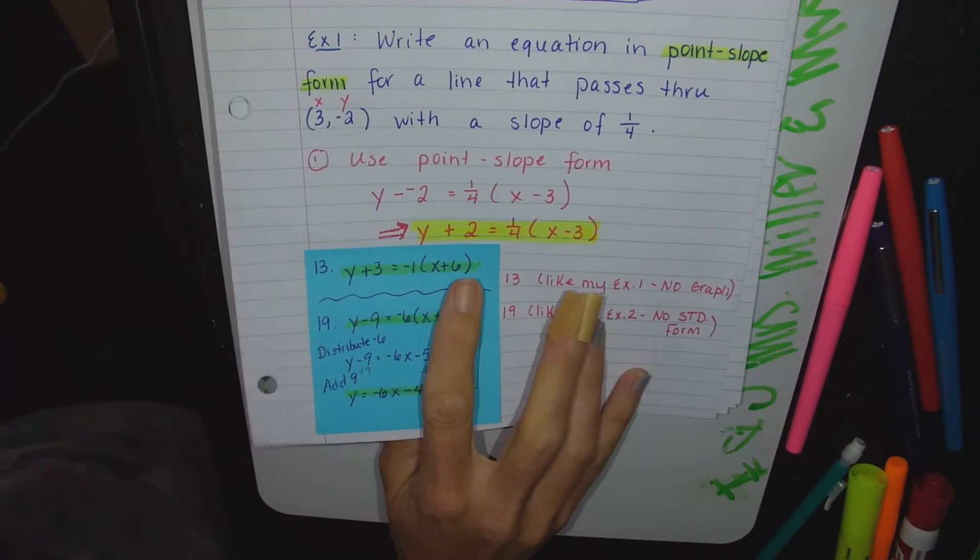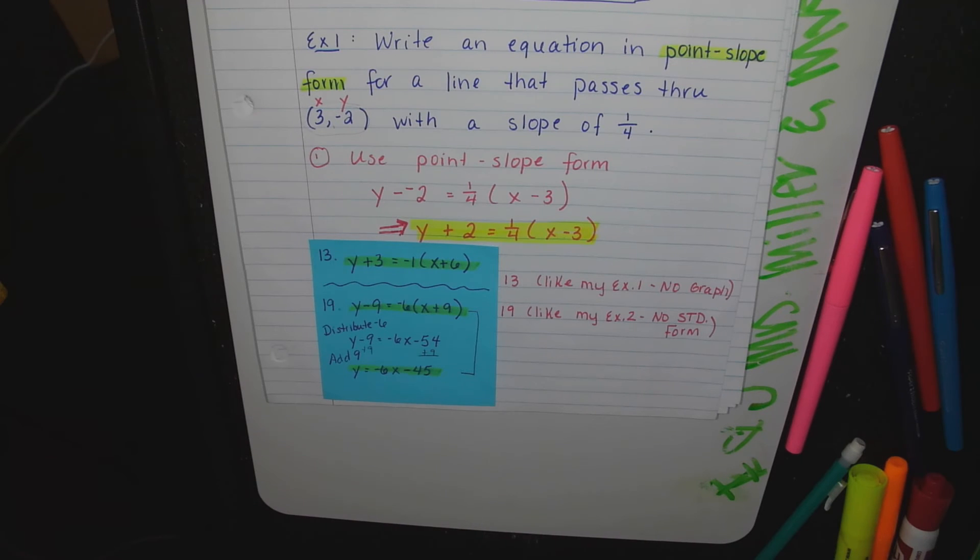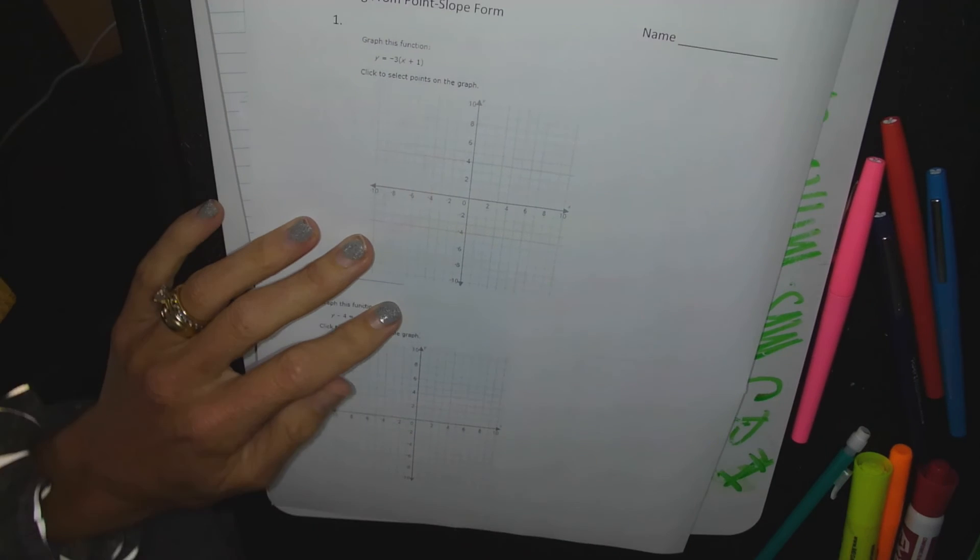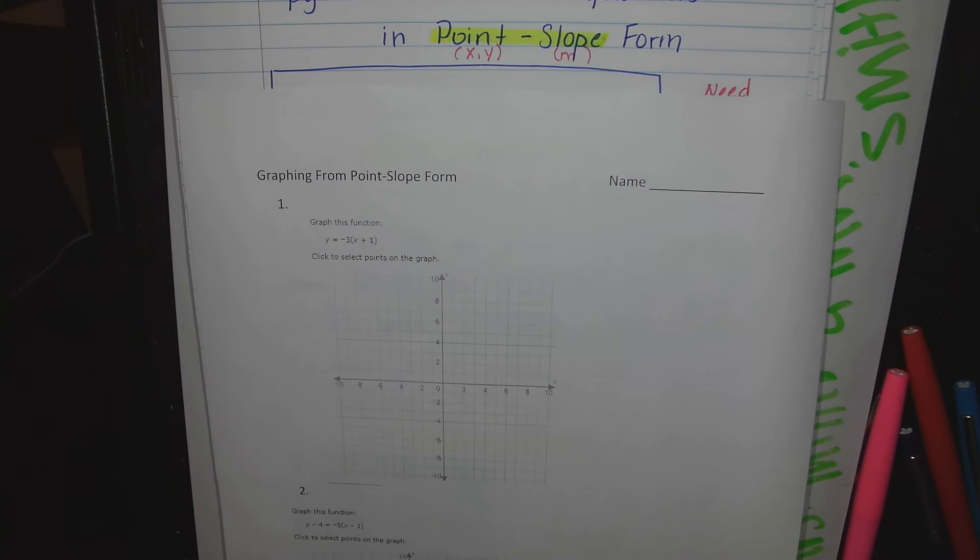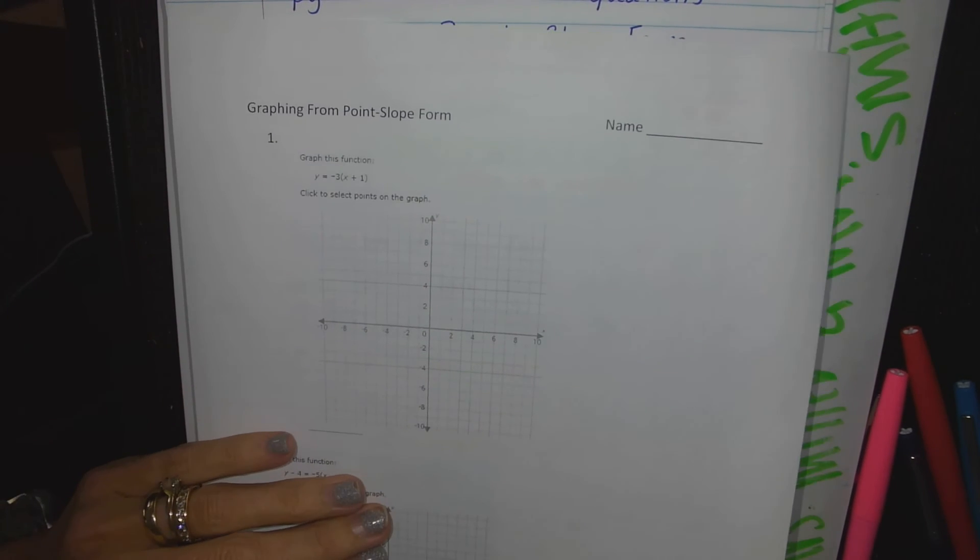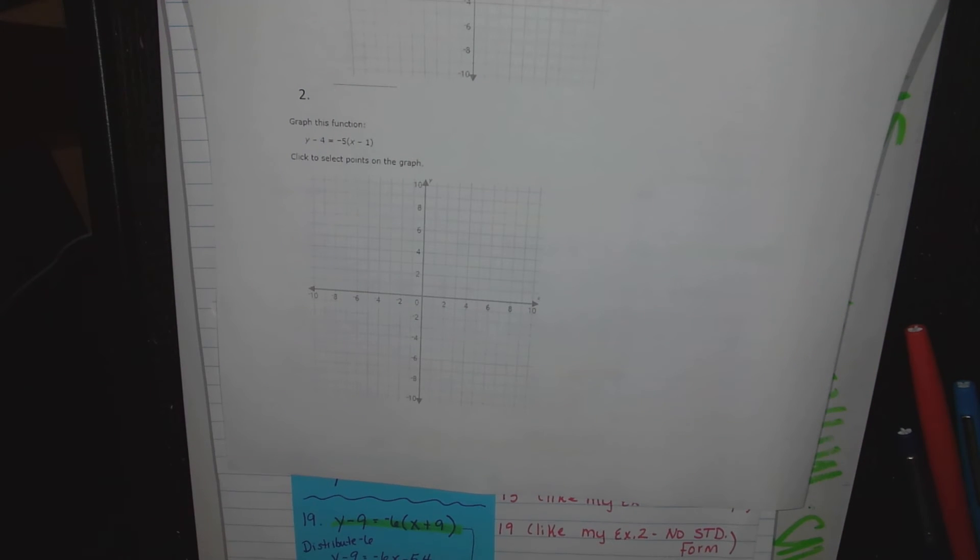All right, everybody got a piece of paper that says graphing? We are going to do this now. We're going to do one and two together. Remember a minute ago I was like, y'all, make sure you see where the - you are the best, everybody gets a piece of candy before you leave. I'm going to do number two first, so let's all go to number two. There's a reason, you'll see.